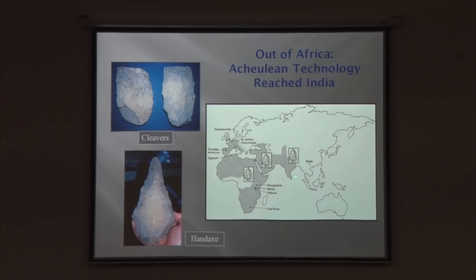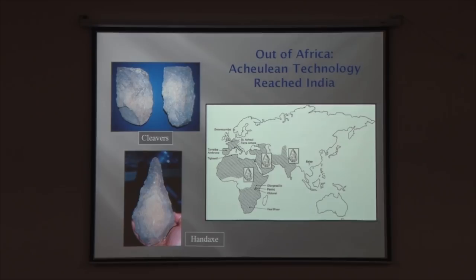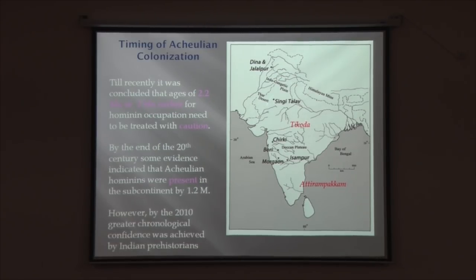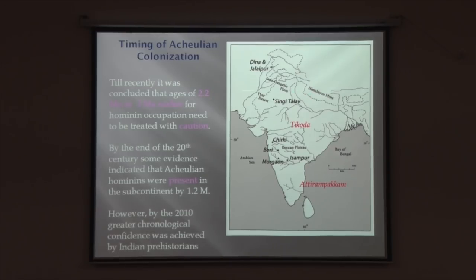There were suggestions in the 1980s of very old Lower Paleolithic occupations — not Acheulean, not Oldowan — but some indications of human presence as early as 2.2 to 1.8 million years ago. These remained isolated for a long time. But by the end of the 20th century, new methodologies, new sites, and reinvestigations at a number of sites were quite encouraging.